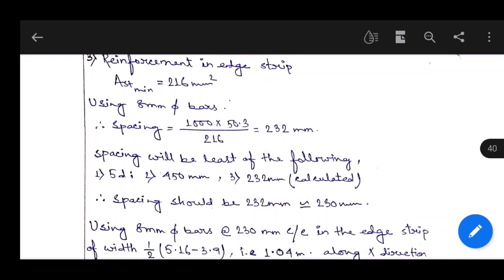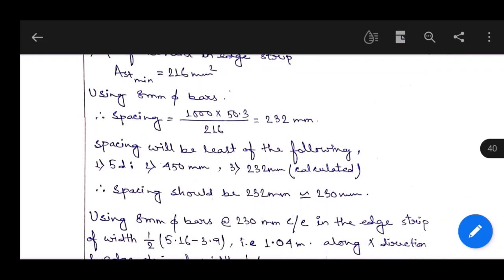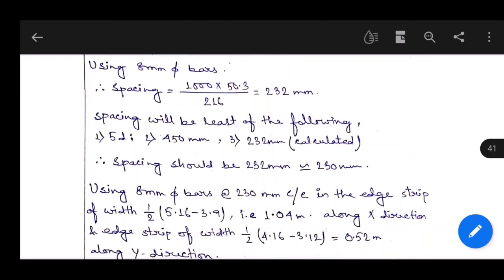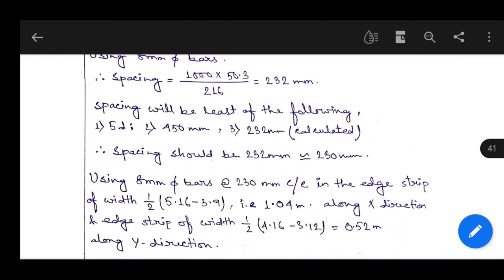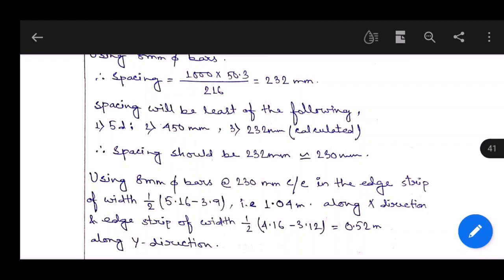Using 8 mm distribution bars at 230 mm center-to-center in the edge strip of width half times (5.16 minus 3.9), equals 1.04 meters along x direction, and edge strip of width half times (4.16 minus 3.12), equals 0.52 meters along y direction.